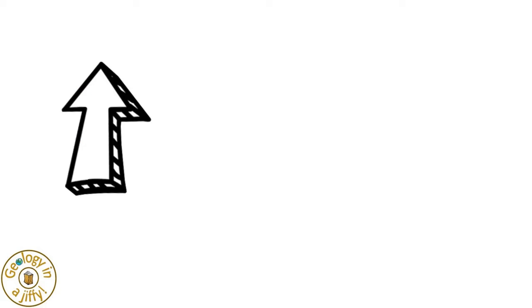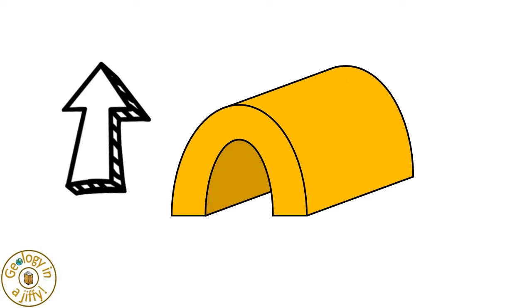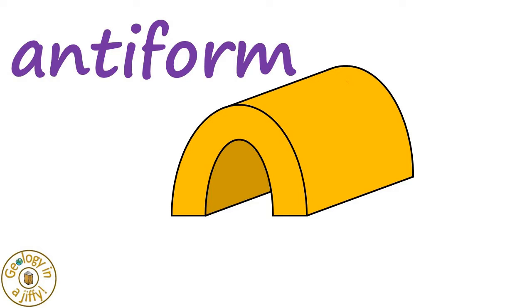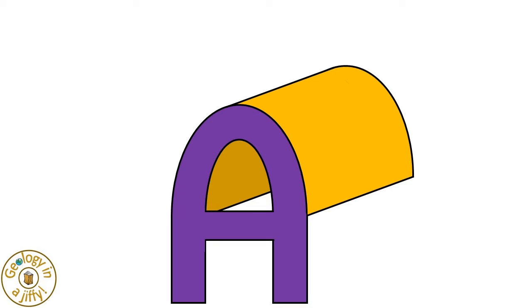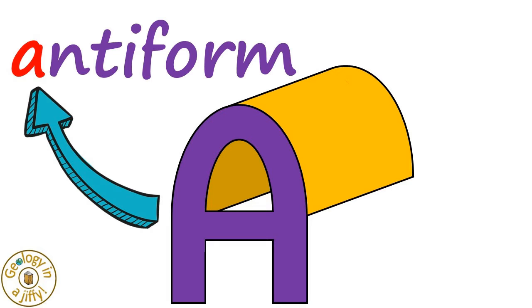A fold that bends convexly upwards like this is called an antiform, which we can remember by the outline of the fold looking like a capital A — and A stands for antiform.